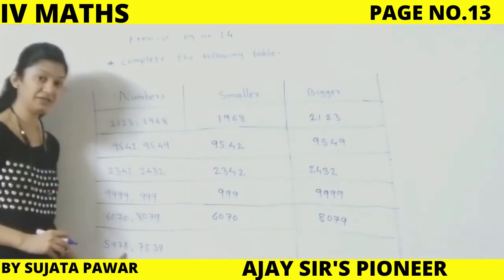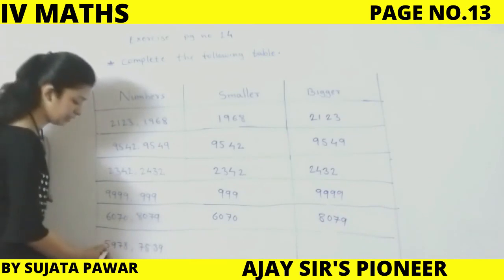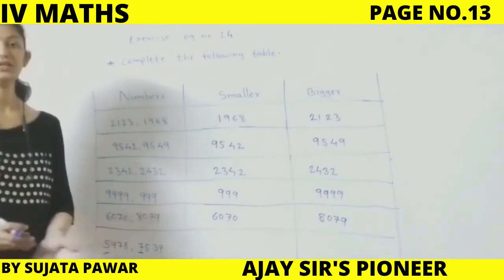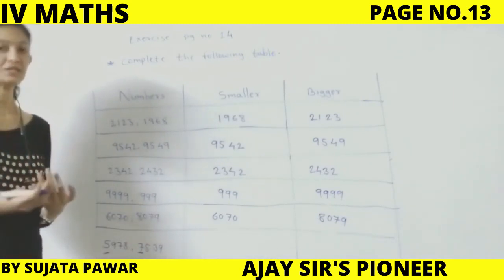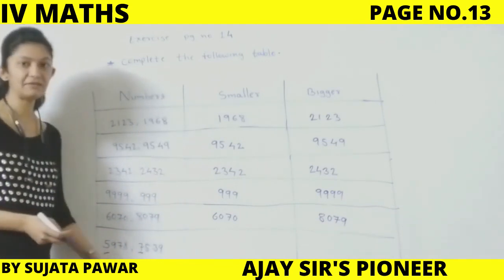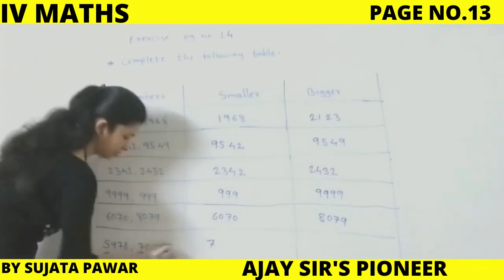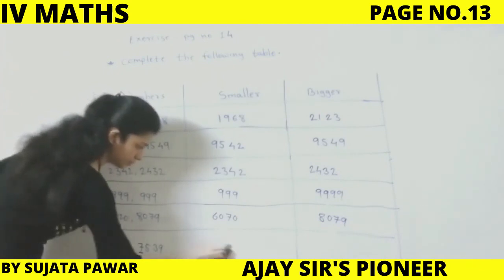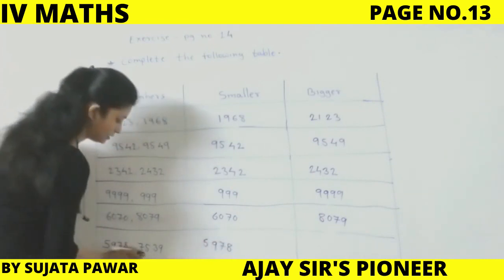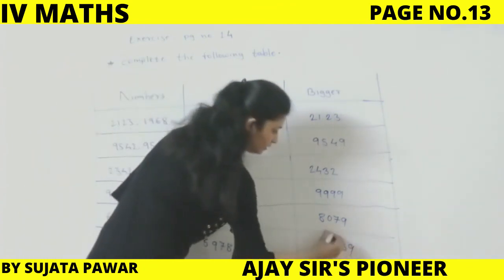And last: 5,978 and 7,539. Yahan par starting mein hi, jo 1000 ki place hai, usme difference nazar aa raha hai — to humein 100, 10 aur unit ki place dekhne ki zaroorat hi nahin hai. 5 is smaller than 7, so obviously 5,978 is in the smaller column and 7,539 is in the bigger column.